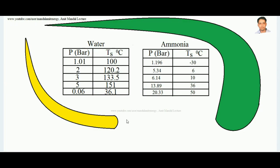In this lecture we will learn about the TS diagram of water - that is the temperature-entropy diagram. The TS diagram of water is a thermodynamic property diagram depicting the thermodynamic properties of water, and it is very useful for understanding the Rankine cycle, which is a vapor power cycle. Right now we are talking about how to understand the TS diagram of water and how to draw it.